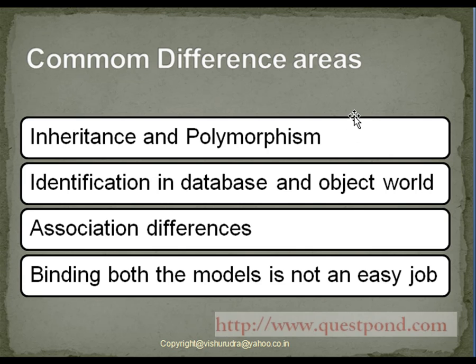Following are some of the differences between object-oriented programming language and relational database. Inheritance and polymorphism are one of the best features supported by object-oriented programming languages. Using them helps reduce code redundancy as well as enable dynamic binding. But the concepts of inheritance and polymorphism are not supported in the relational world.